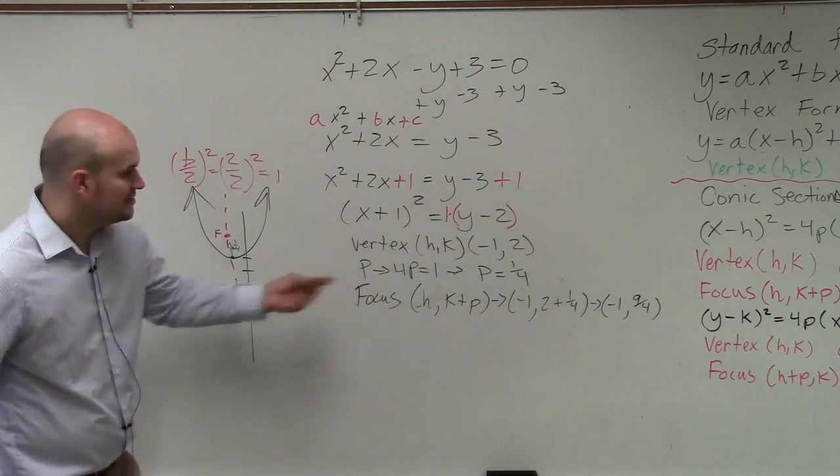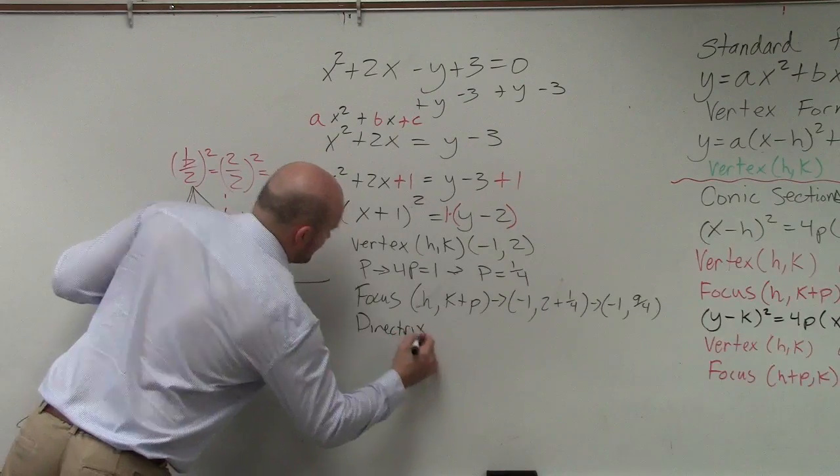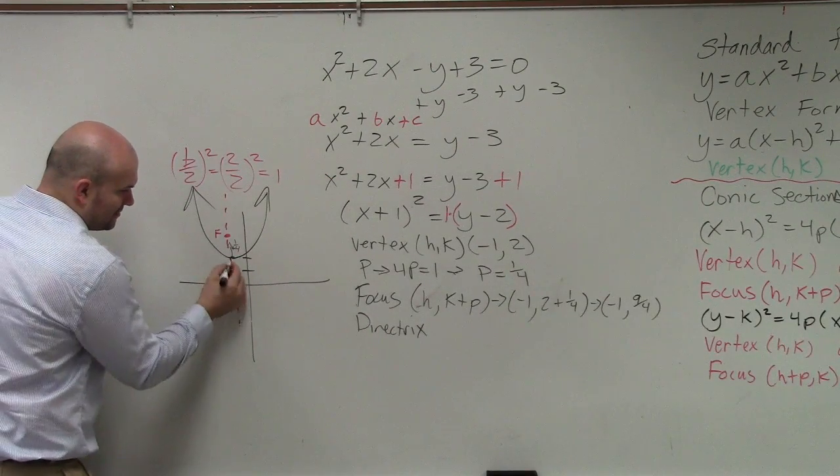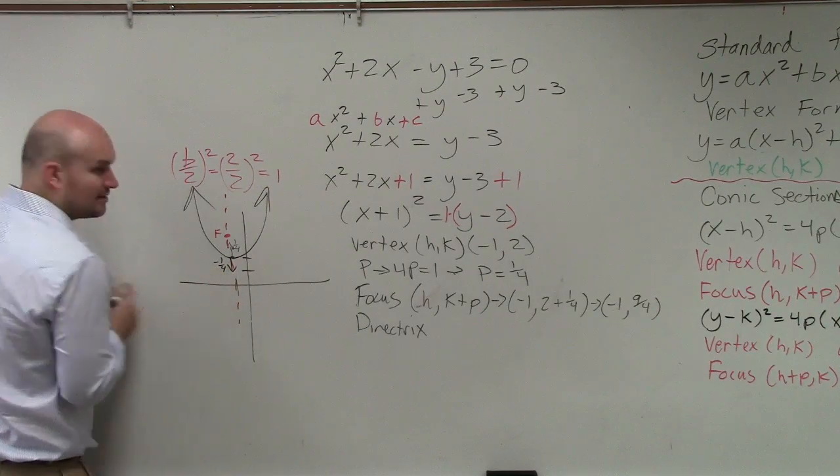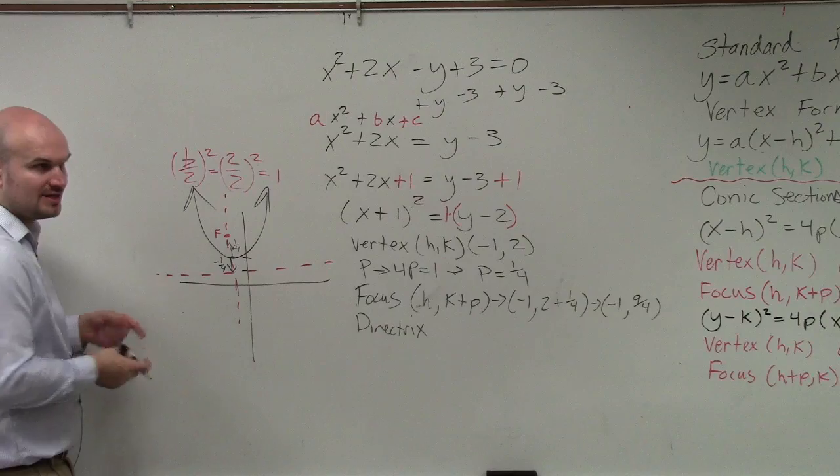And then, to find the directrix, I now need to subtract, right? I'm now subtracting negative 1 fourth. And then that's going to produce a horizontal line, right? So therefore,